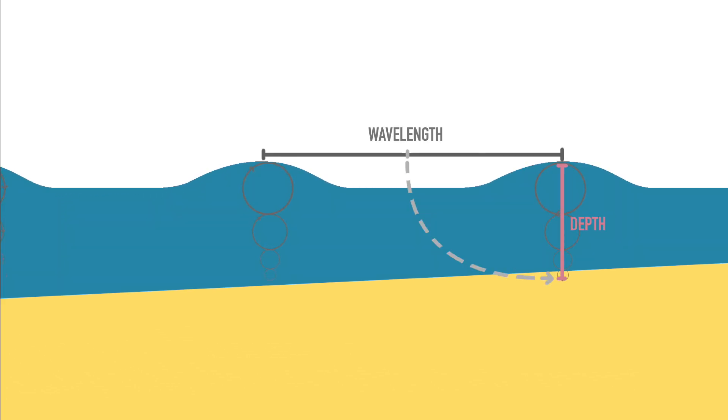As we mentioned in the previous episode, waves travel as a stack of decreasingly sized cylinders of energy from the ocean surface down. As a deep water wave approaches a continental shelf and the ocean depth becomes shallower than half the wave's wavelength, these cylinders begin to rub along the ocean floor, reducing the energy within the wave through friction.